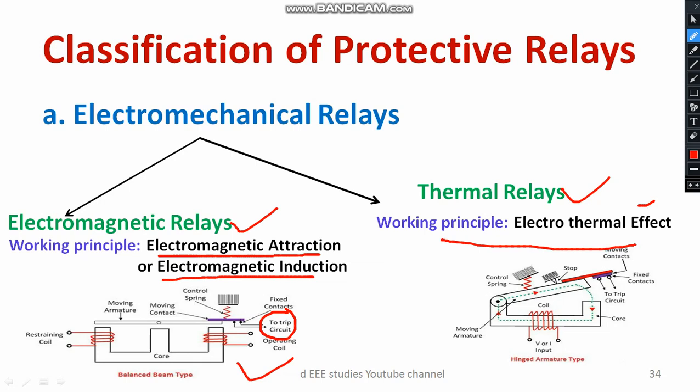This is similar to what happens in an iron box used in household applications. We have a core part, a moving contact, and a fixed contact. Current or voltage passes through the coil, thereby magnetizing the core. The metal part is then directly attracted towards the core through a controlling mechanism that aids the movement. This activates the tripping circuit. If the fault current is very high, the attraction rate will also be very high. This is how the thermal relay operates.